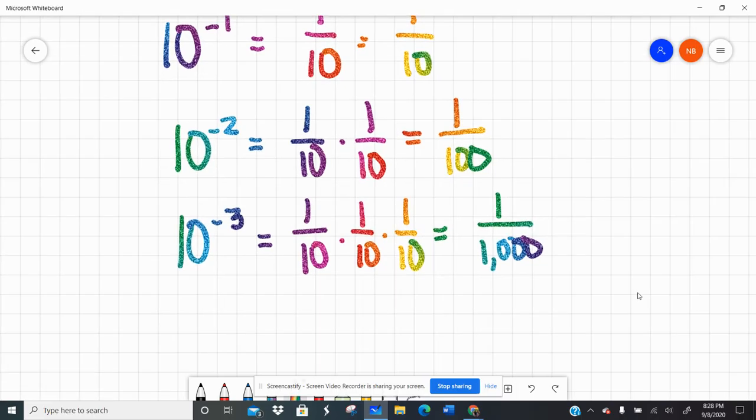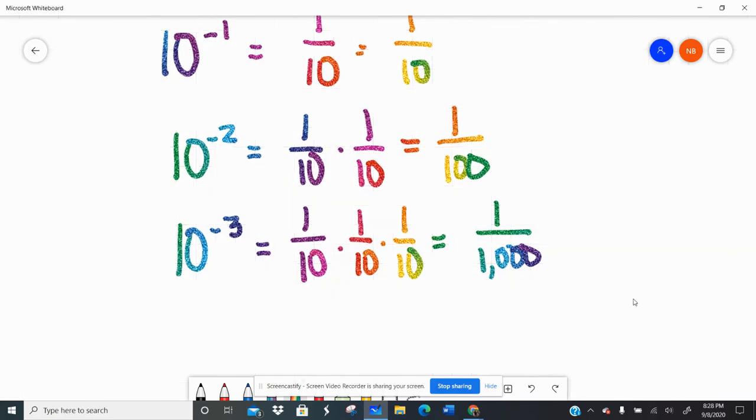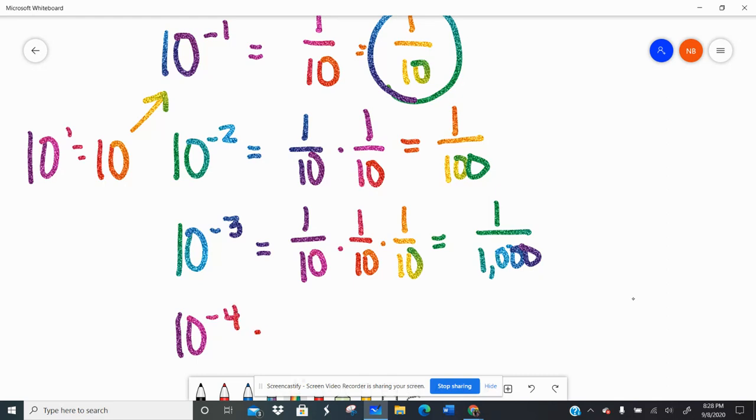So it follows the same pattern, but now we're talking about reciprocals. So instead of 10 to the 1 being 10, 10 to the negative 1 is 1 tenth. Reciprocal is just a fancy word for flip. So what would 10 to the negative 4th be? It would be 1 tenth times 1 tenth times 1 tenth times 1 tenth or 1 over 10,000. And so on and so forth.